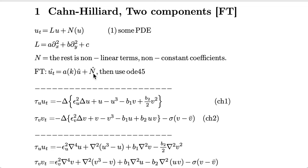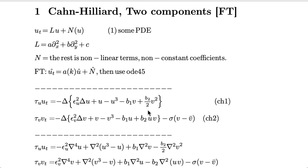N̂ contains the Fourier transform of the rest of the terms. This is already an ordinary differential equation, and for this I can use any kind of ODE solver. In particular, I'm going to use ODE45. To give an example, here I have a couple of Cahn-Hilliard equations, where v1 and v2 are the coupling constants.